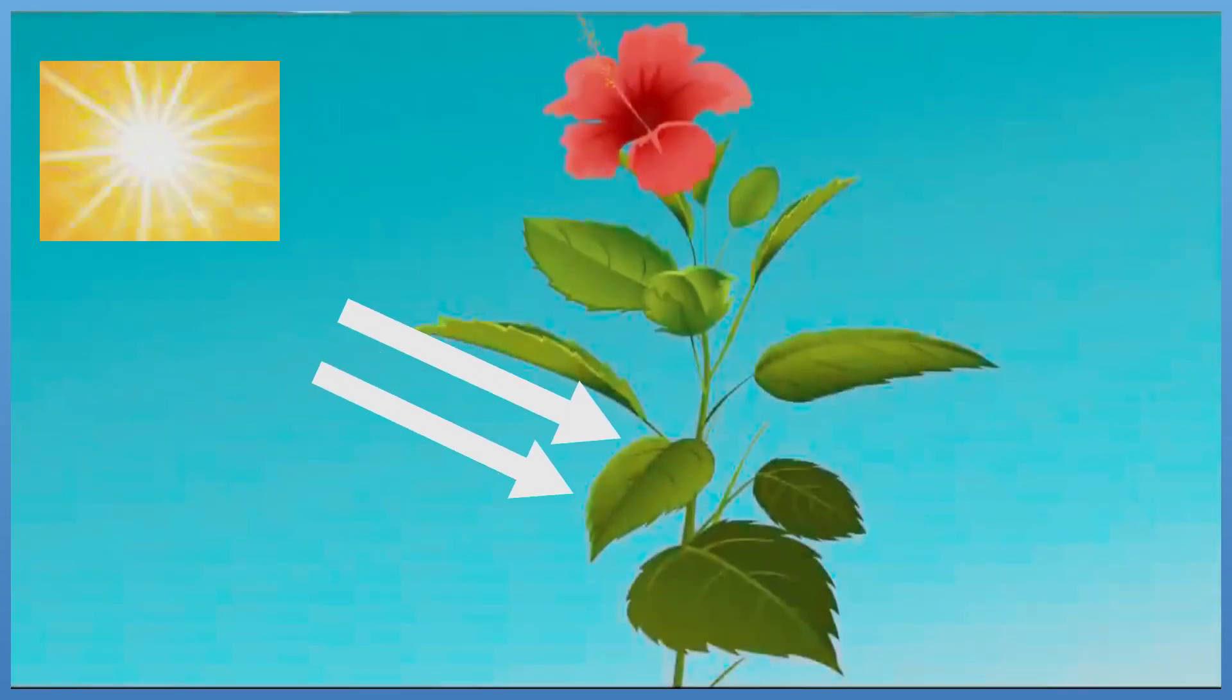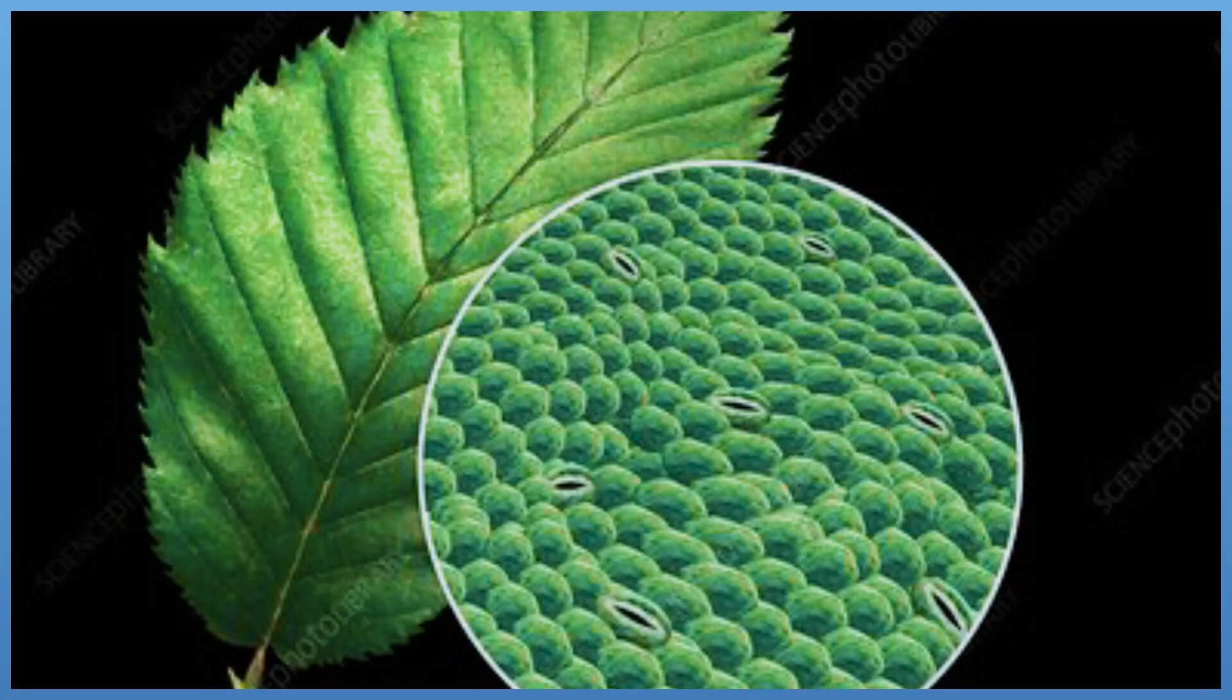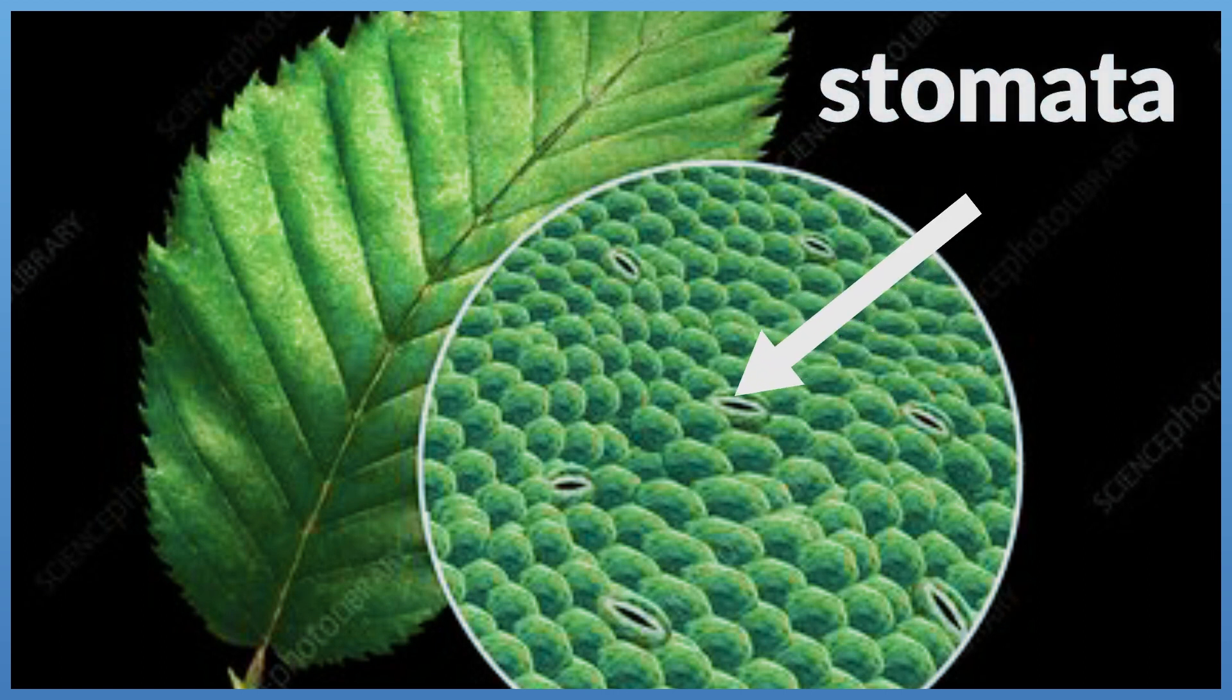Leaves collect sunlight. Also, the air that plants need moves into the leaves through tiny openings called stomata.